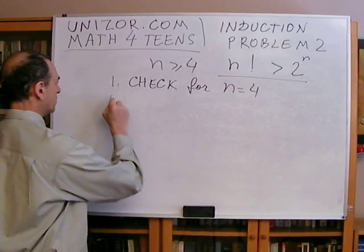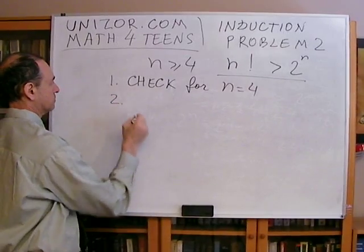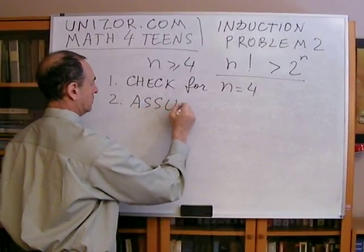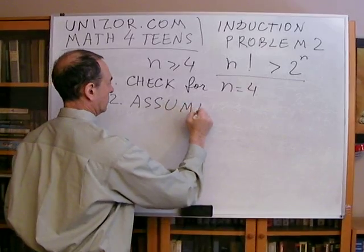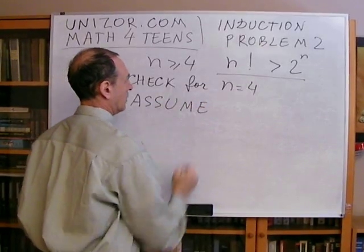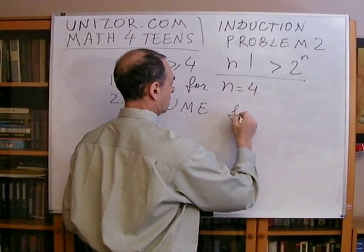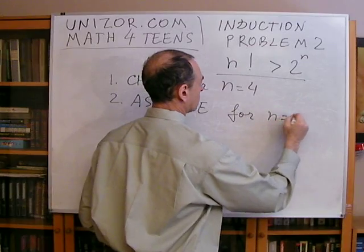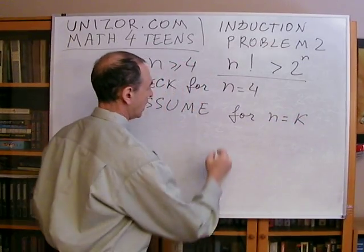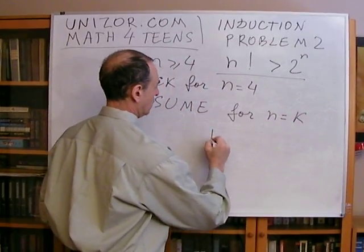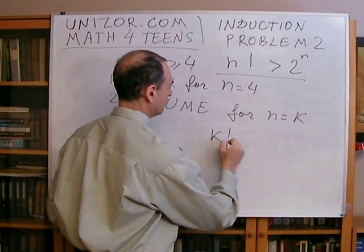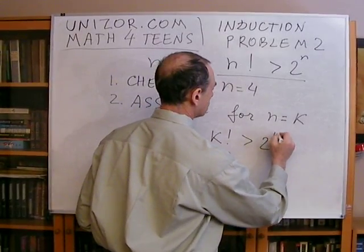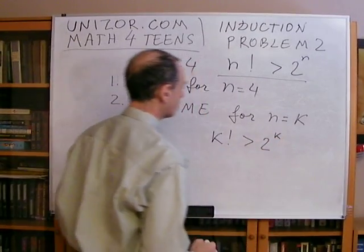Step number two — assume for n equals k. We assume that k factorial is greater than two to the k-th power.